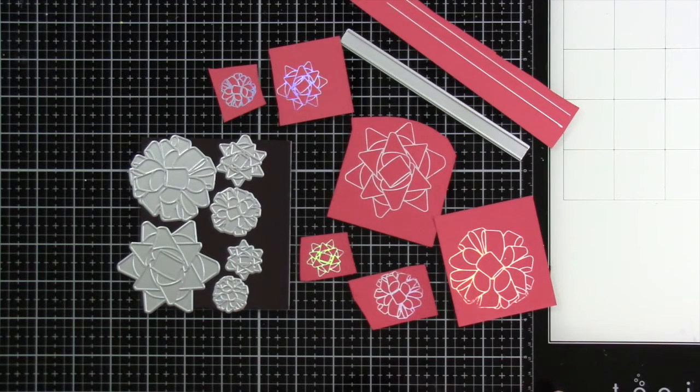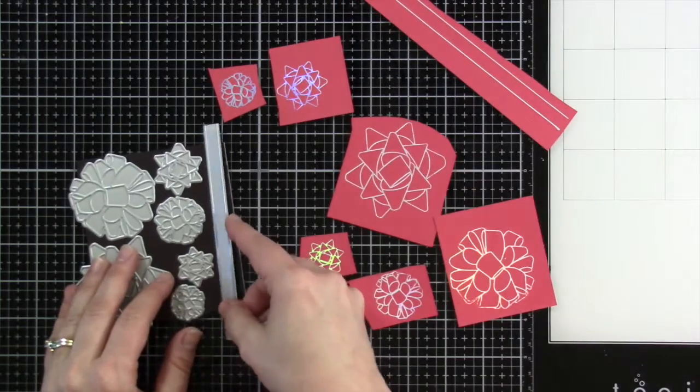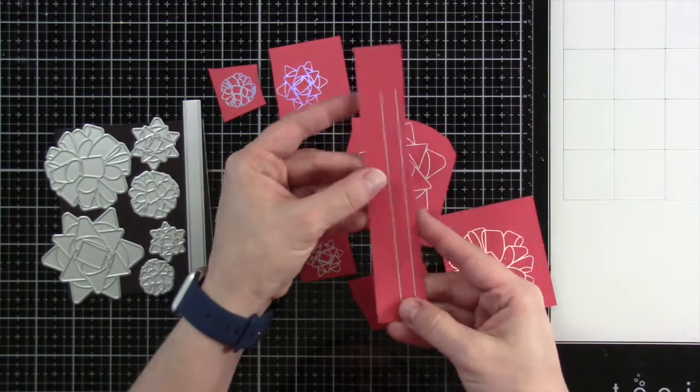The coordinating die set is available separately because this set is the foil version of our popular Big Bows Little Bows stamp set.